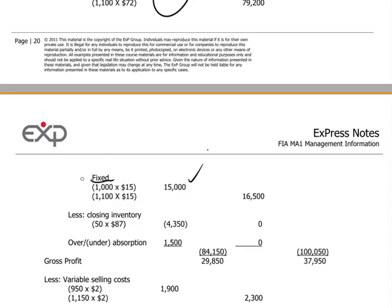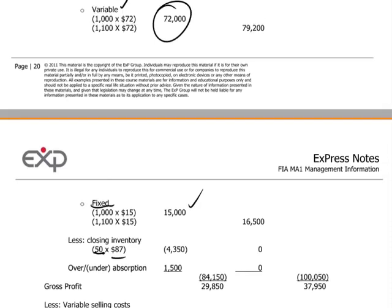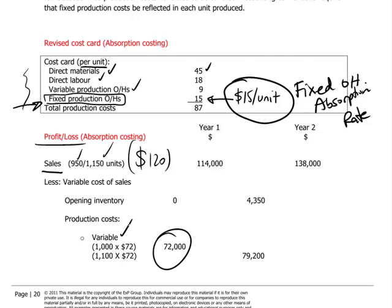Then there's the closing inventory. We produced more than we sold, so at the end of year one we have 50 units left in inventory, recorded at the full production cost of $87. Always link this back to the cost card itself — $87 is the sum of all production costs, both variable and fixed.